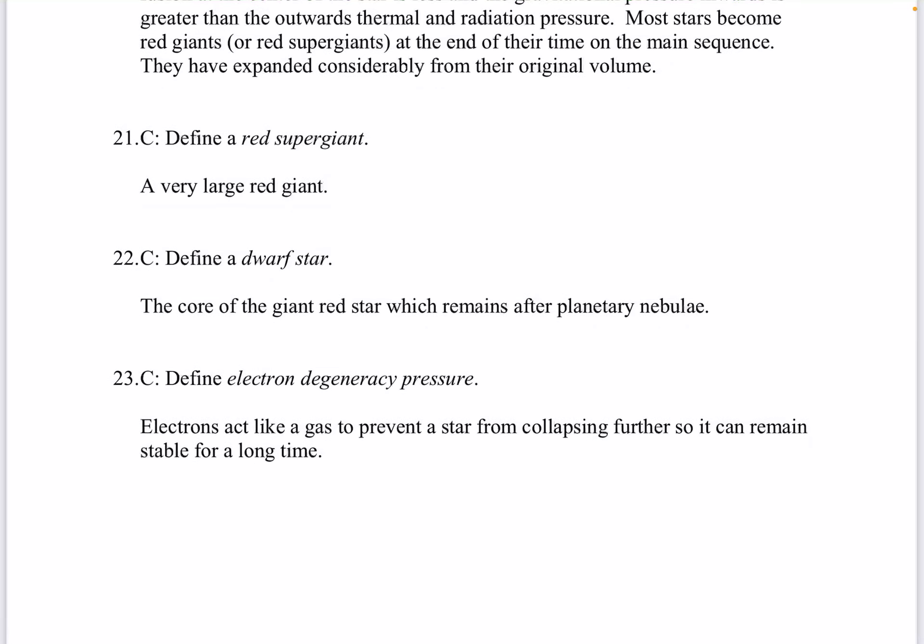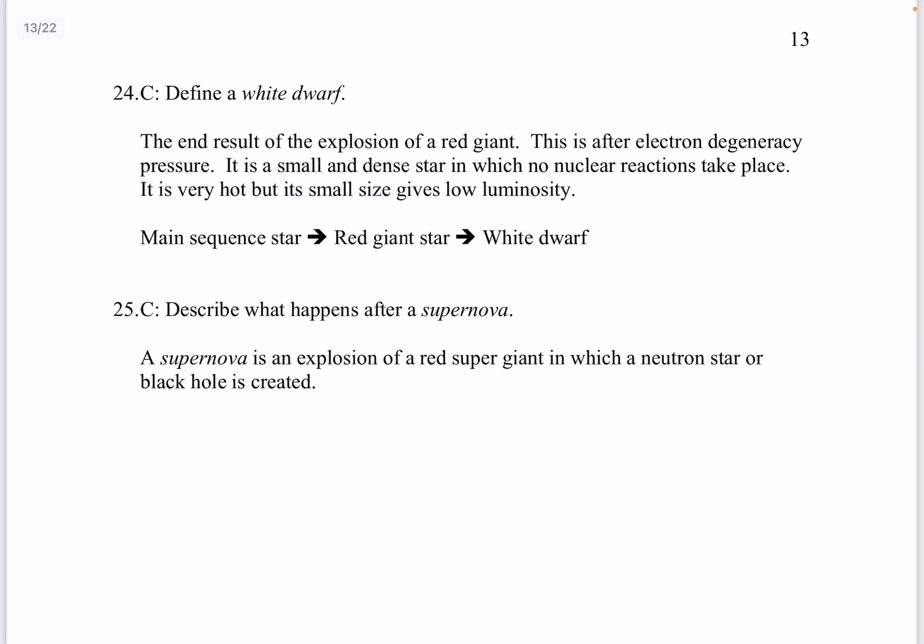Question 21. Define a red supergiant. This is a very large red giant. Question 22. Define a dwarf star. The core of the red giant star which remains after planetary nebulae. Question 23. Define electron degeneracy pressure. Electrons act like a gas to prevent a star from collapsing further so it can remain stable for a long time. Question 24. Define a white dwarf. This is the end result of the explosion of a red giant. This is after electron degeneracy pressure. It is a small and dense star in which no nuclear reactions take place. It is very hot but its small size gives low luminosity. So the process is a main sequence star than a red giant star than a white dwarf.